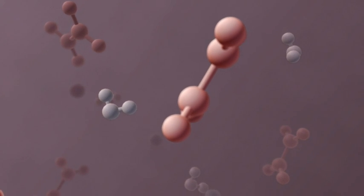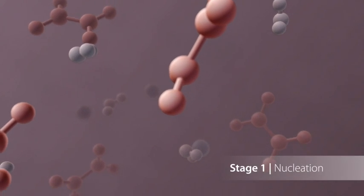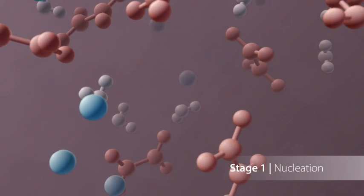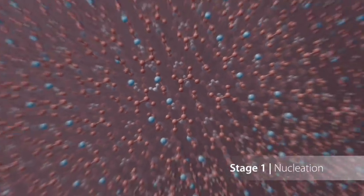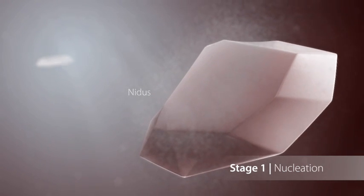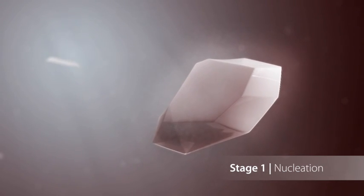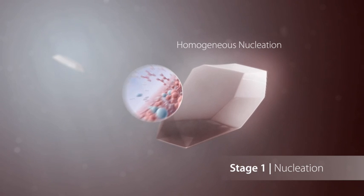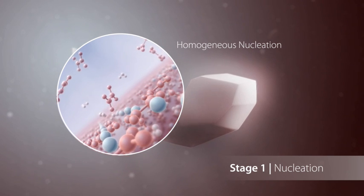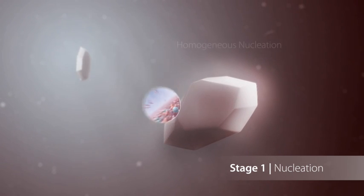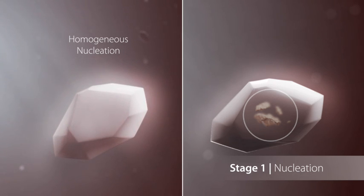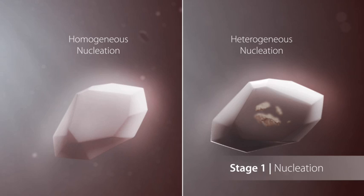How is a stone formed? The first step is nucleation. Ions such as calcium and oxalate that have been filtered into the urine by the kidney spontaneously join together to form a solid crystal nidus — this is called nucleation. There are two kinds: in homogeneous nucleation, crystals form around a nucleus with the same composition. Crystals of a different composition can also form around the nucleus, and organic materials such as cell debris may be deposited between the crystals as a matrix — this is heterogeneous nucleation.